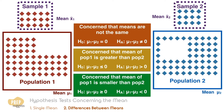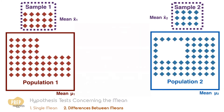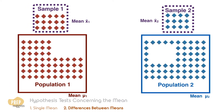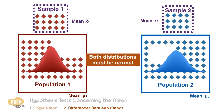There are a number of factors to consider when deciding what kind of test to apply for the difference between two means. Note that in all of these tests that we're going to discuss, the distributions of both populations have to be normal. Solutions for non-normal distributions are outside the scope of the Level 1 curriculum.